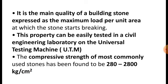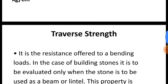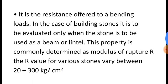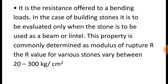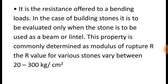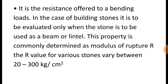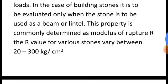This property can be easily tested by Civil Engineering Laboratory using the Universal Testing Machine, UTM. The compressive strength of building stones is 2.7 to 200 kg per cm². The second strength parameter is the resistance offered to bending loads. In the case of building stone, this is evaluated only when the stone is to be used as a beam or a lintel. The modulus of rupture value is 20 to 30 kg per centimeter square.